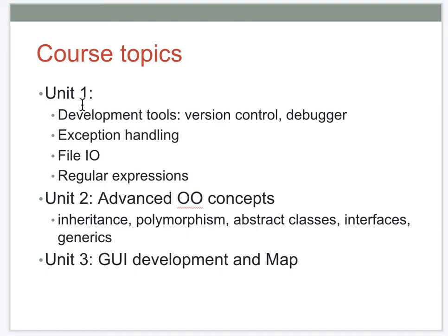Overview of the topics. Unit 1 will cover version control with Git, using the debugger, exception handling, file I/O, and regular expressions. Unit 2 will look at more advanced object-oriented programming tools — specifically inheritance, polymorphism, abstract classes, interfaces, and generics. Unit 3 will cover graphical user interface (GUI) development and the map data structure, one of the fundamental data structures in computer science.